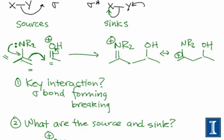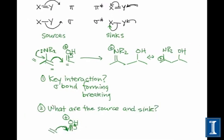So internal arrows are optional, and they don't figure in to the key interaction, it's still pi to pi star. And we don't really care about the nature of that lone pair on nitrogen at all, from the perspective of labeling and classifying the electron flow.